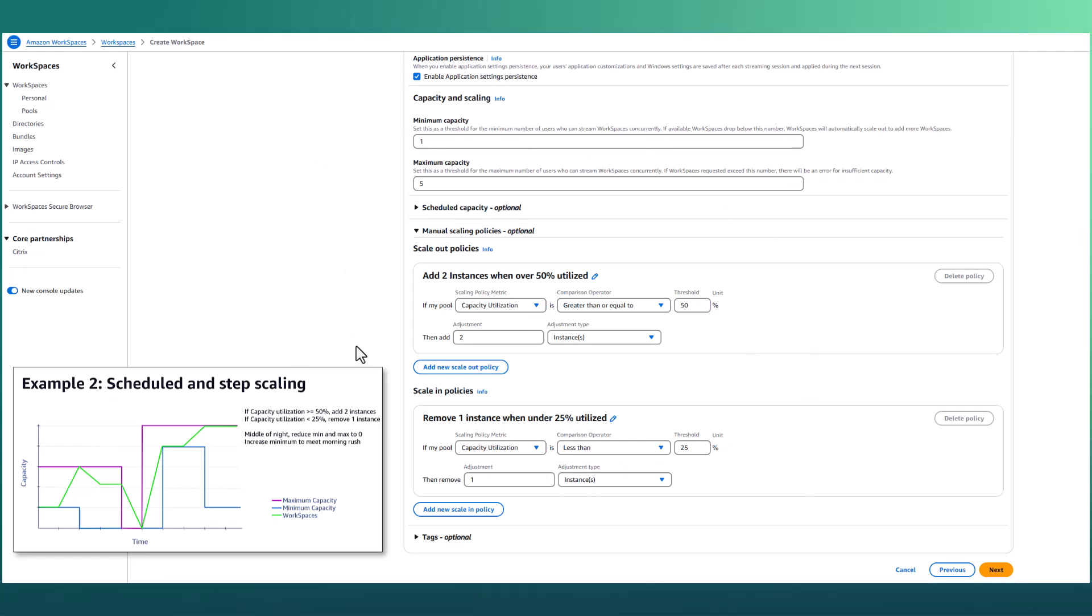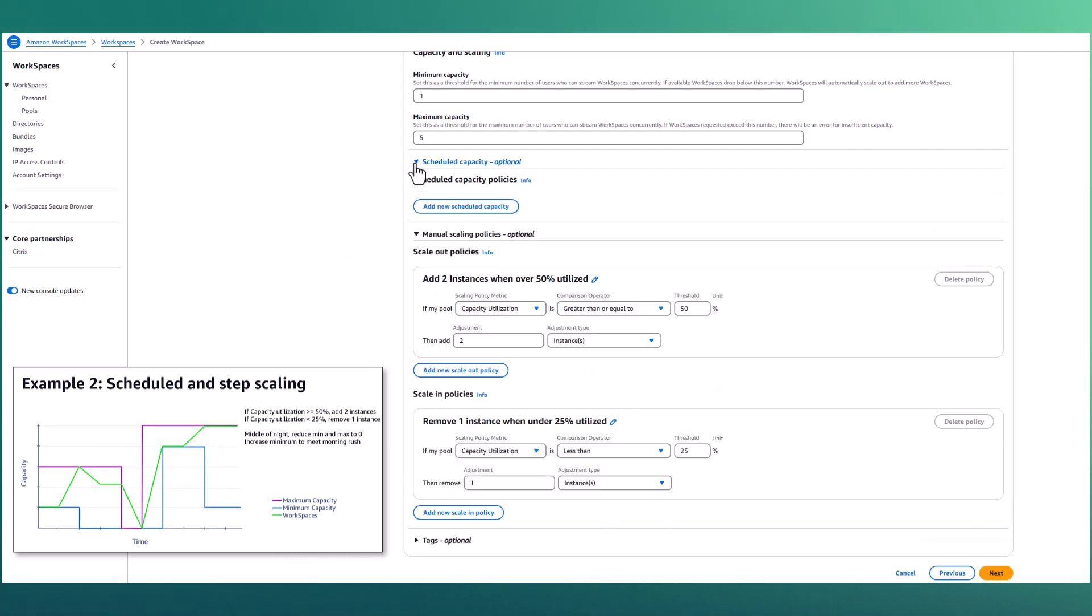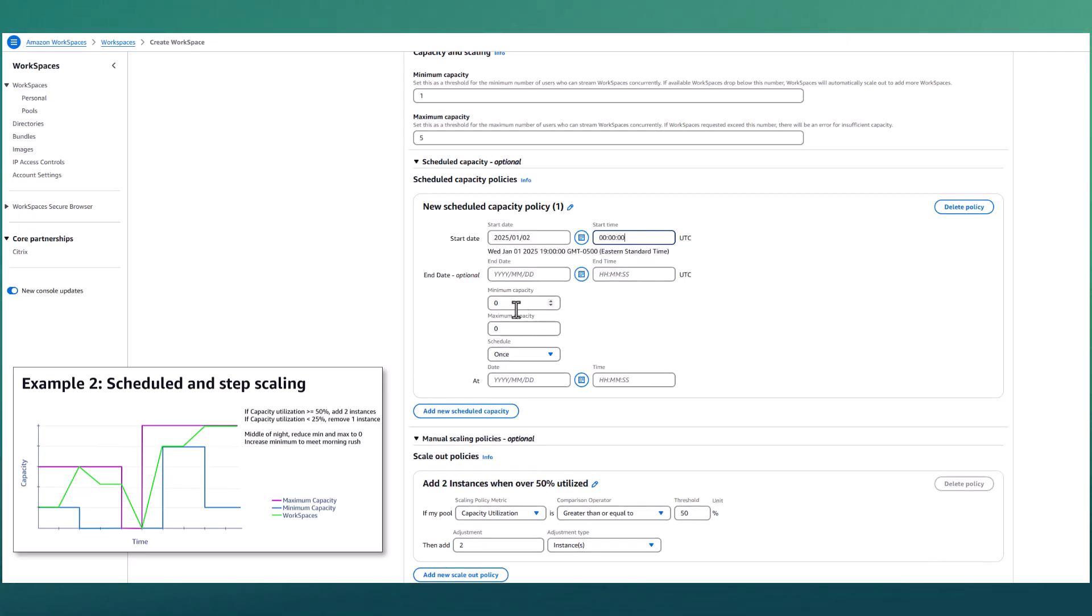We'll now expand upon this by adding scheduled scaling policies to adjust the minimum and maximum values depending on the time of day. I expand scheduled capacity policies and then select add new policy to begin building out an example that matches example two. I'm setting the start date and time to the past so the policy will take effect immediately. I'm keeping the minimum and maximum capacity at zero. And then for schedule, I'm selecting a cron expression.